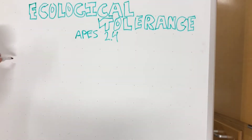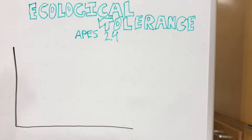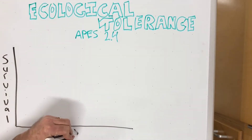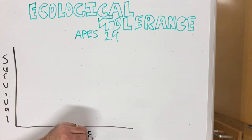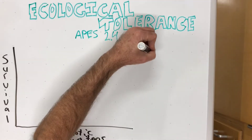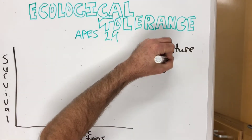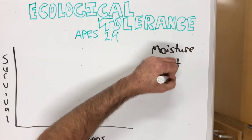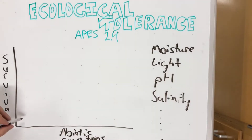We can graph ecological tolerance with survival rate on the y or vertical axis and the abiotic factors on the horizontal or x axis. Abiotic factors could include moisture, light, pH, salinity, temperature, and soil type.